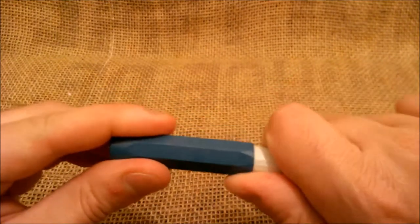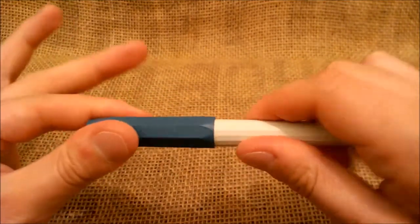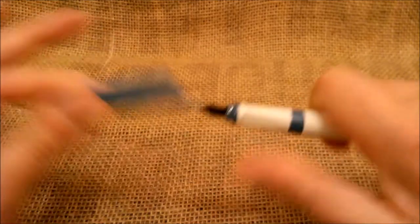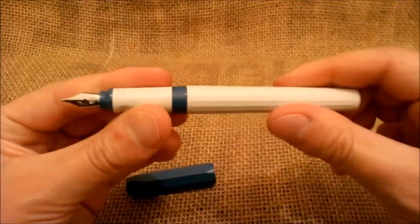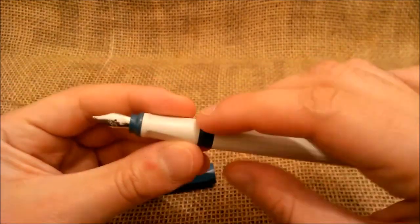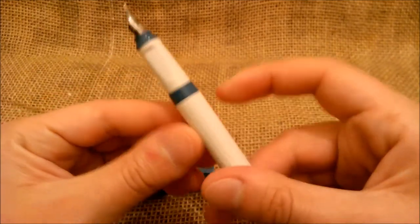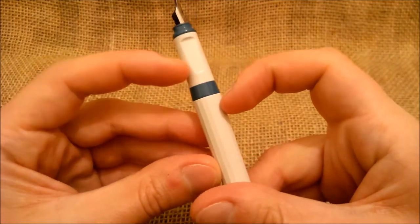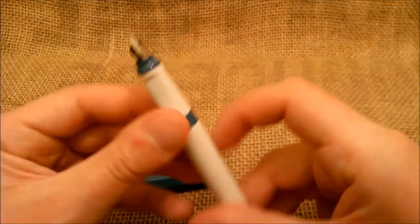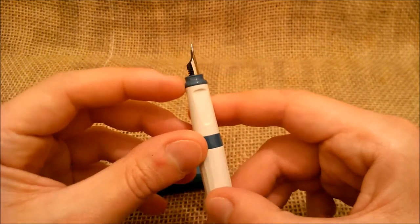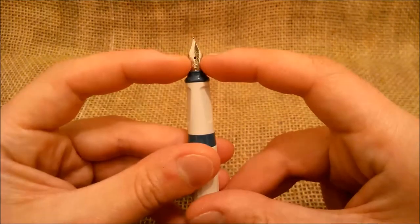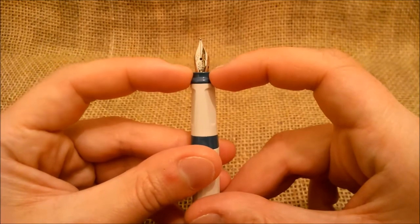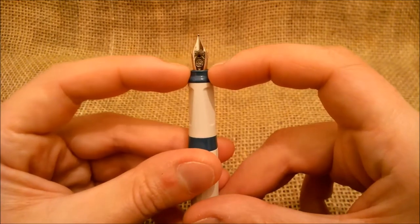The cap fits by pression. And when you take off the cap you'll see a blue band between the section and the barrel, and another blue piece here just before the nib. The nib is a steel nib. This one is an M nib.